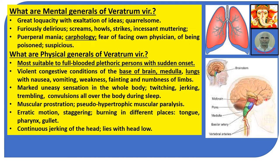The base of the brain is composed of the following structures: midbrain, pons, and medulla, mainly. There are also two arteries — the basilar artery and the vertebral artery. The base of the brain and the lung are the most important organs where this plant causes inflammation.